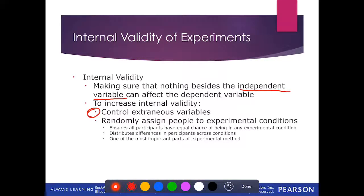So everyone in every group was exposed to the same emergency — that's one way they controlled extraneous variables. If you did it differently every time, some cases a person might be pretending to have a seizure in a non-convincing way, which would affect whether a person helps. Because it was pre-recorded and controlled throughout each scenario, each group, and each trial, we know that was controlled for in the experiment.